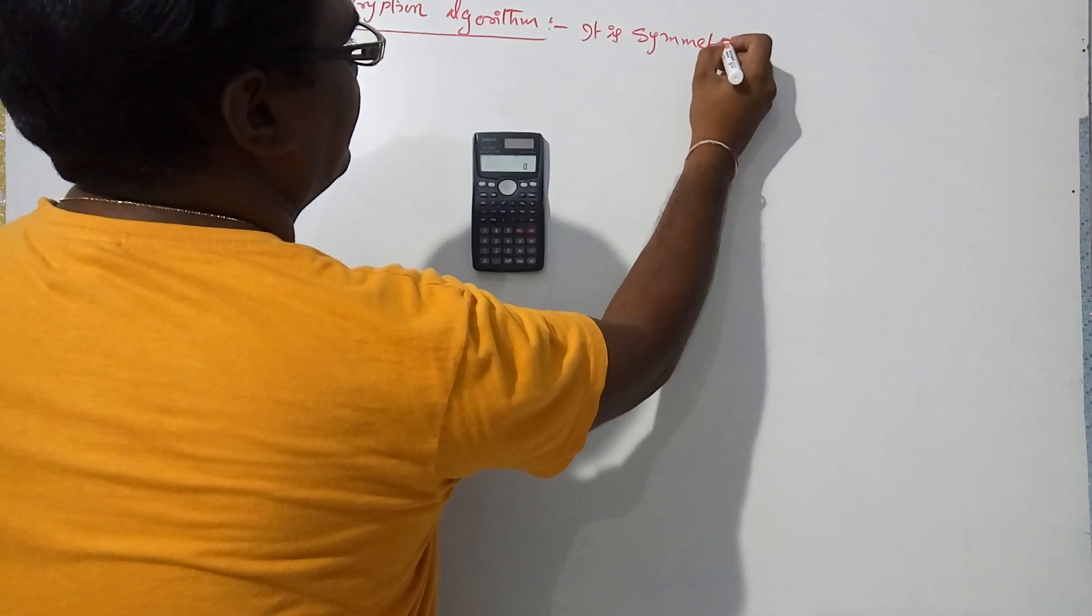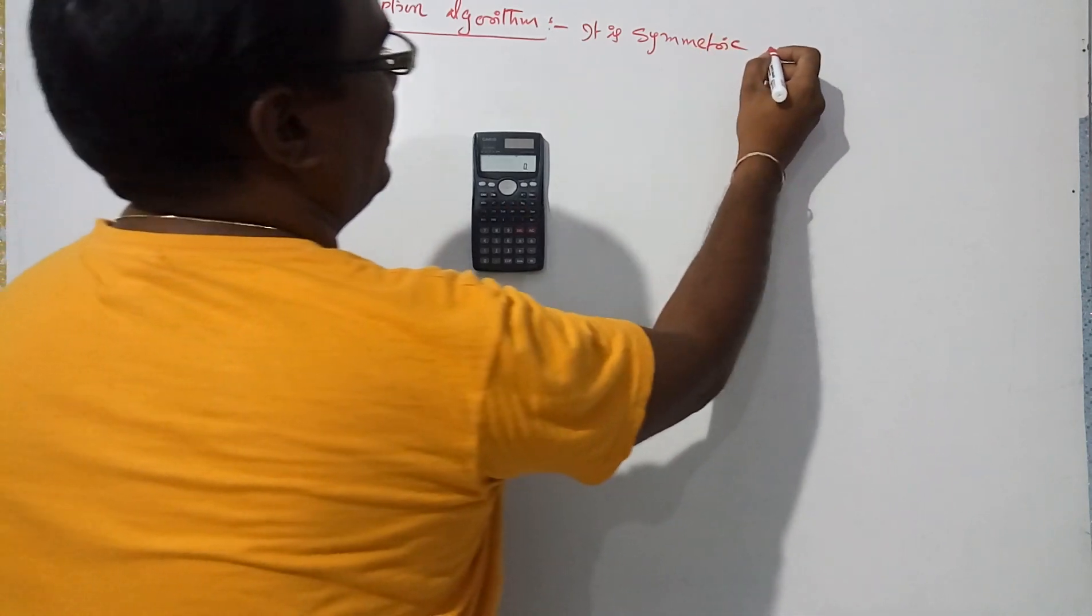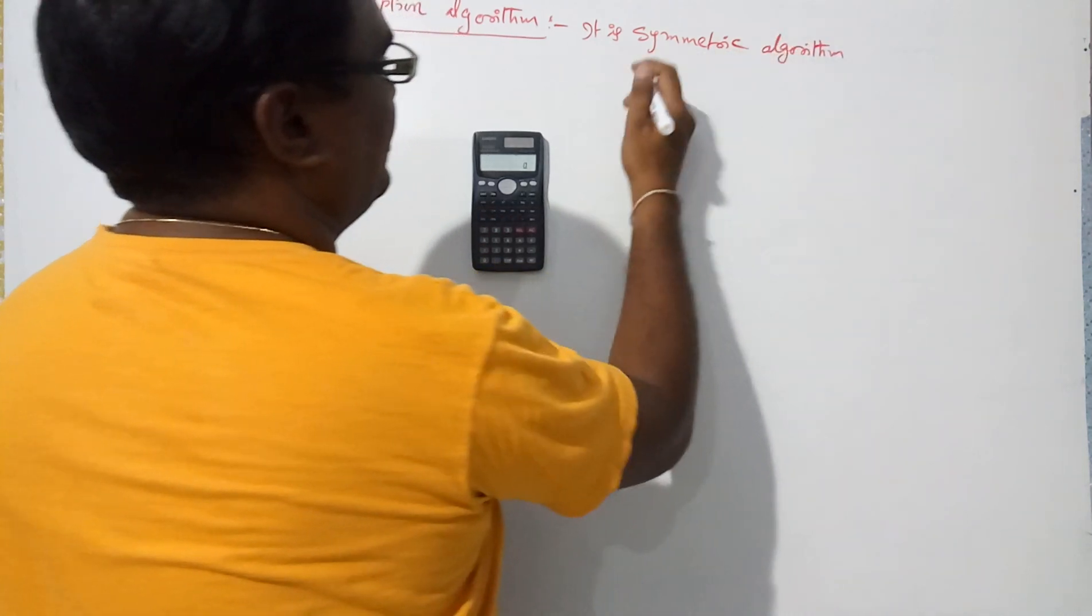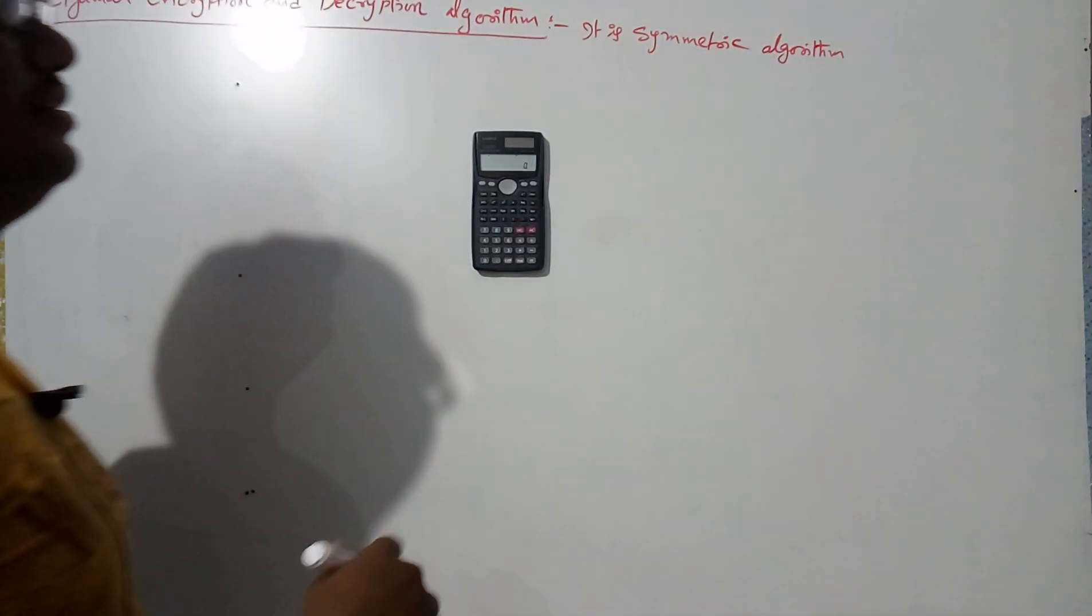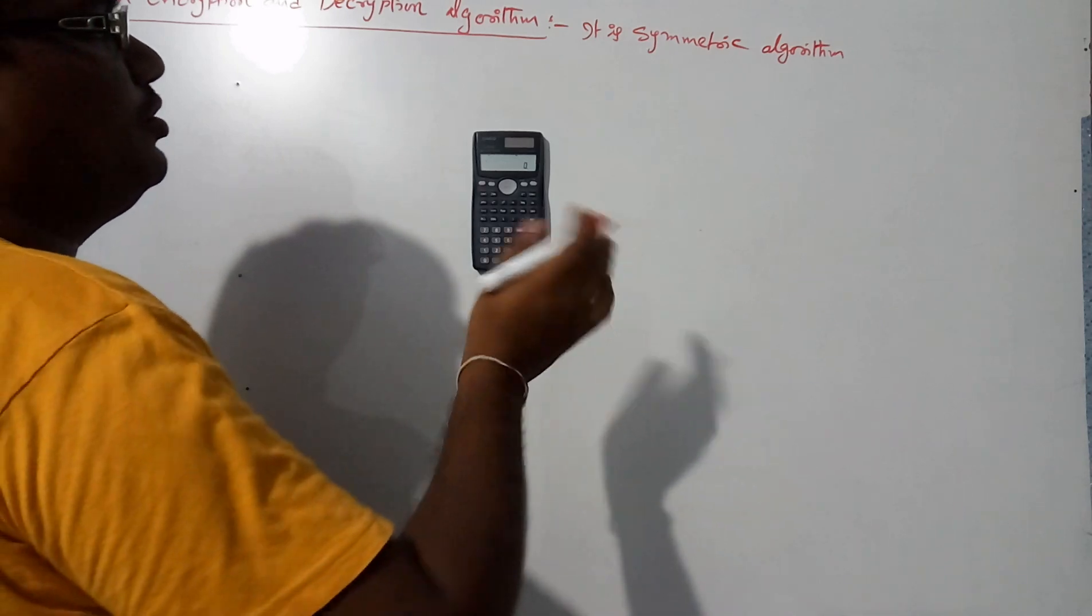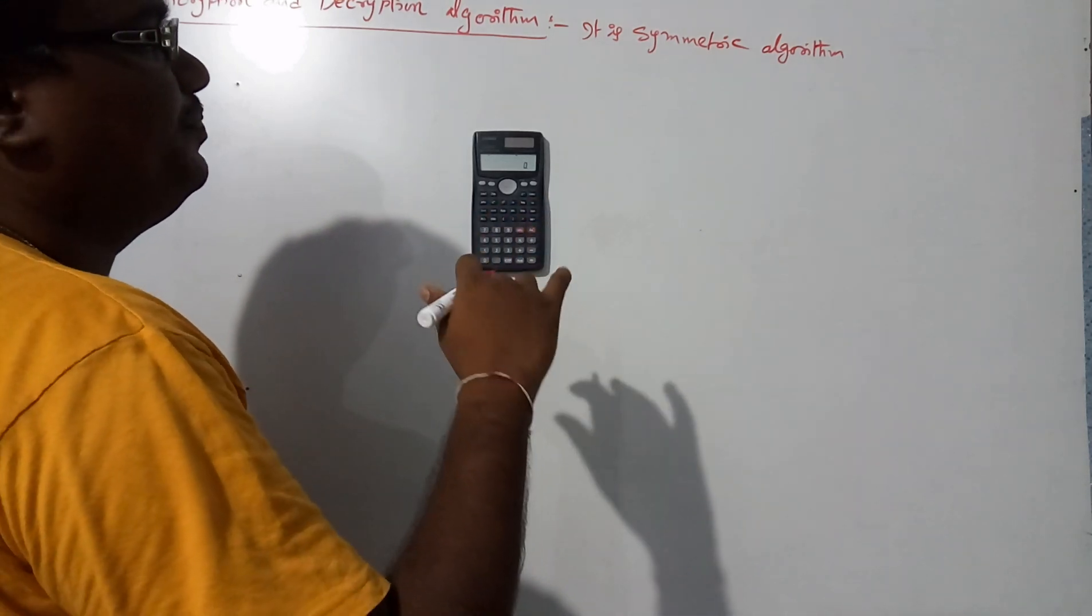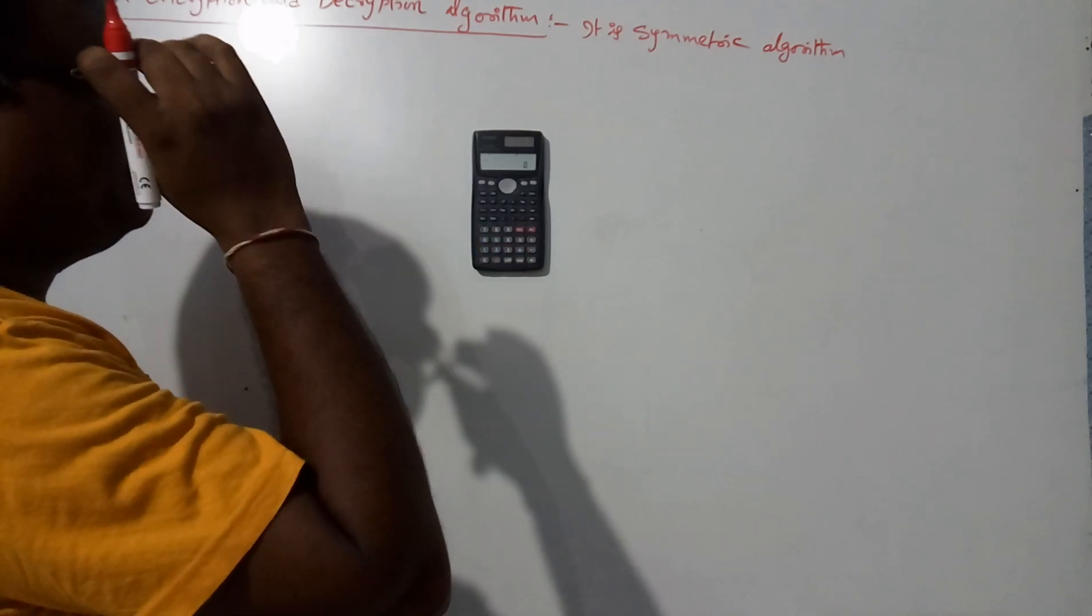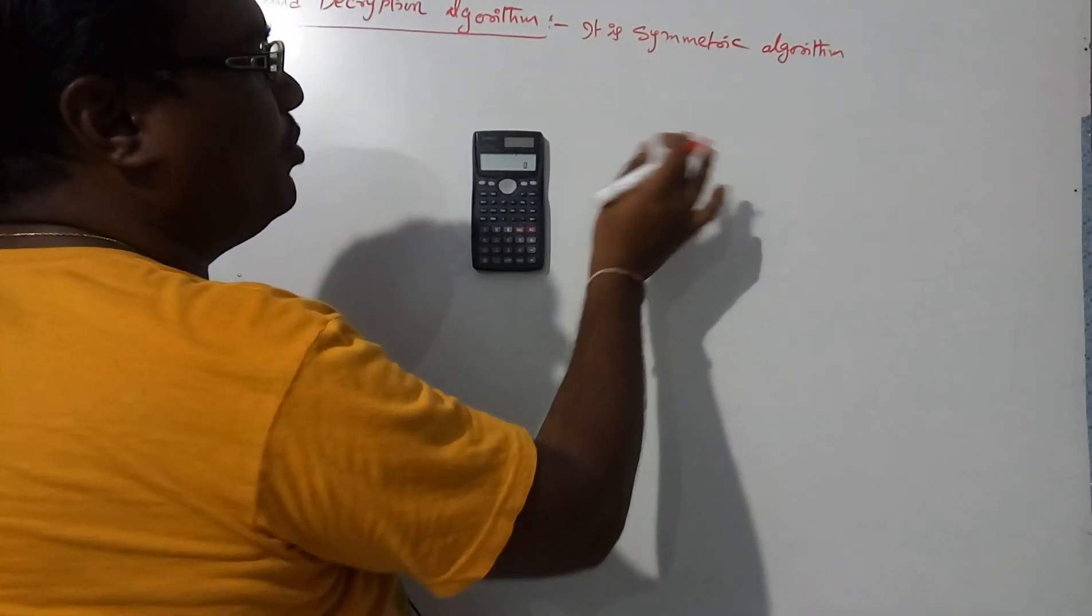It is an asymmetric algorithm, meaning sender and receiver both parties are using distinct keys. Sender and receiver both are using different keys.